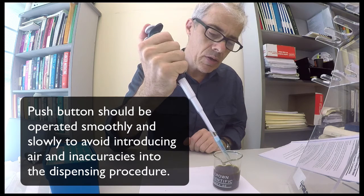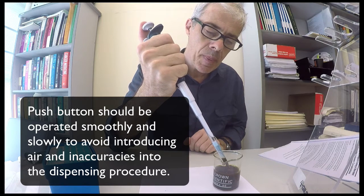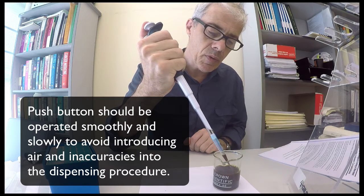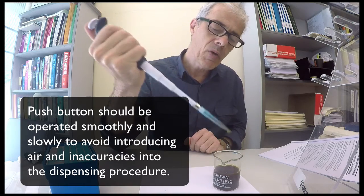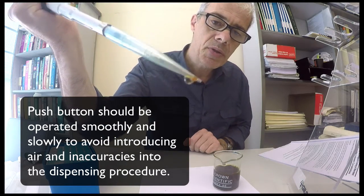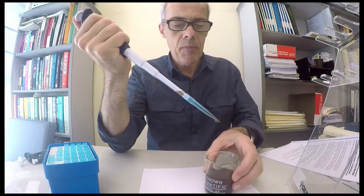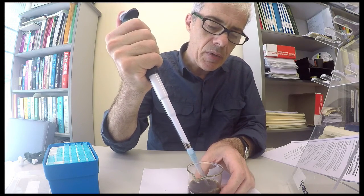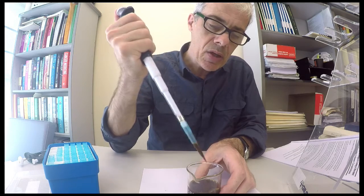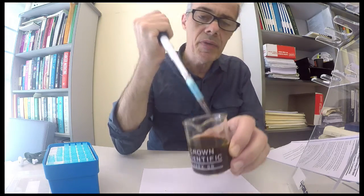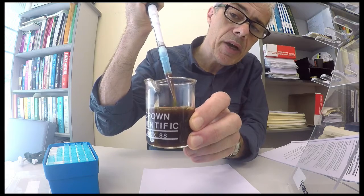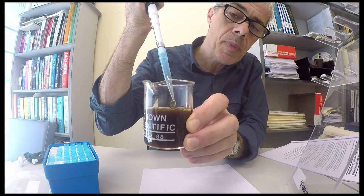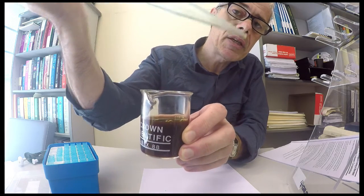And you can draw up slowly and you can be a little more firm when you're dispensing. Often you'll get bubbles on the end. Depending on what you're dispensing, I often dispense onto the side of the container and that way you tend not to get residue left in the tip.